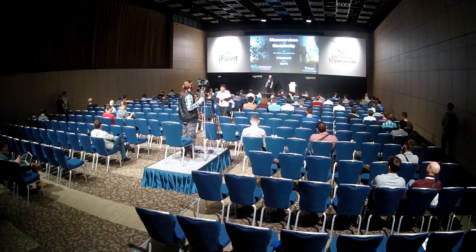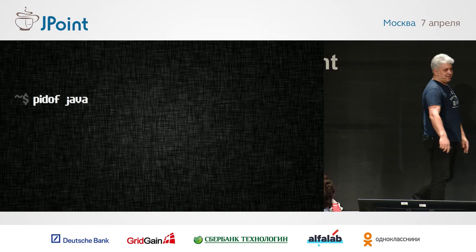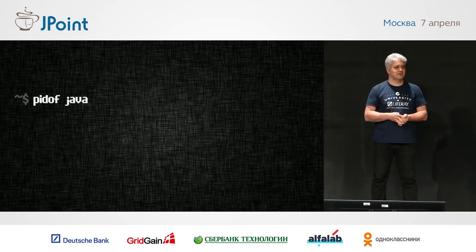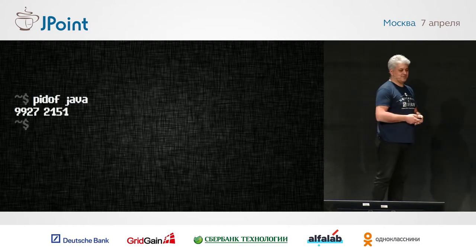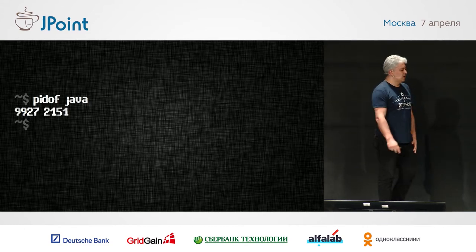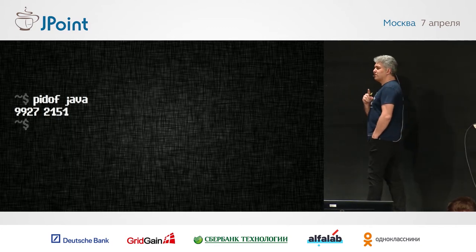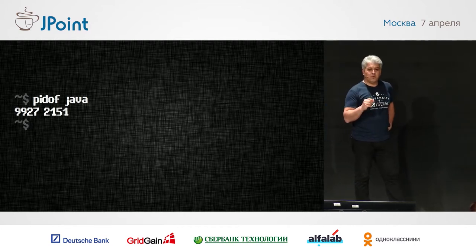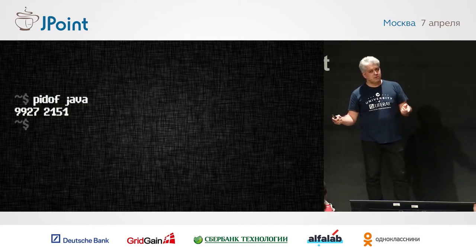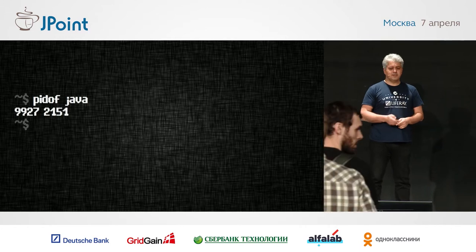Before we do that, let me ask you this question: do you know this operating system called Linux? It's a fairly unpopular one. And if you do, you probably know what this does — what happens if you type something like this in Linux? It gives you the ID of the process that's Java. So if you have two Java processes running, that's going to give you those two IDs. Let's think for a second what this command needs to do: it needs to know what processes are in the operating system, scan through them, figure out which ones are called Java, find their IDs, and give them back to you. So it's not that simple after all.